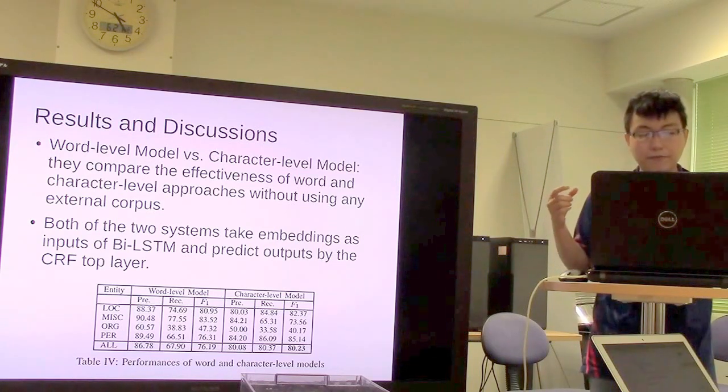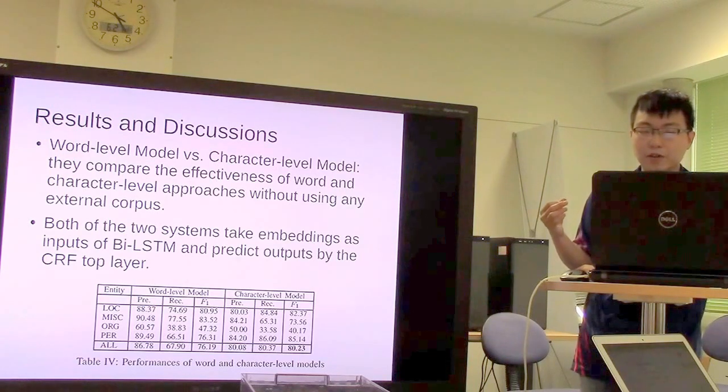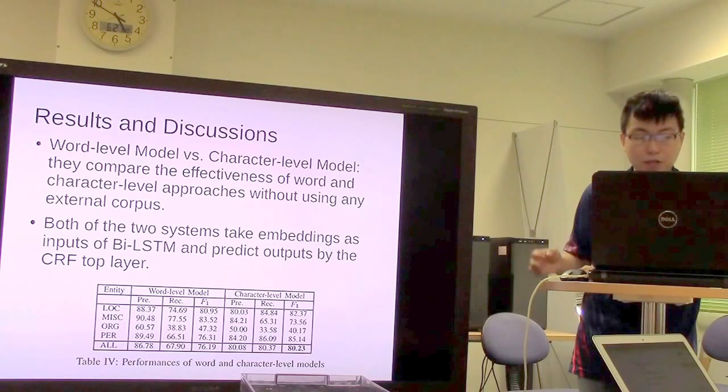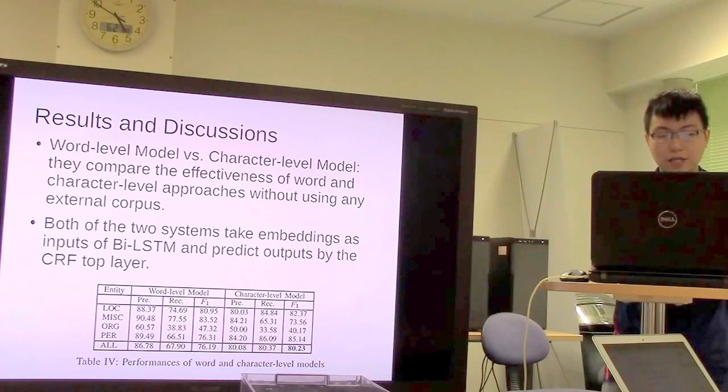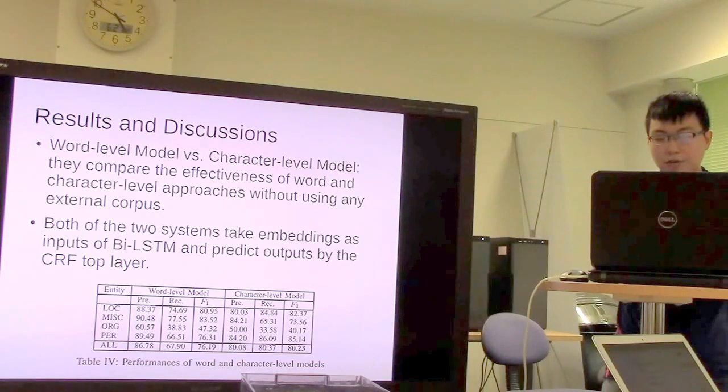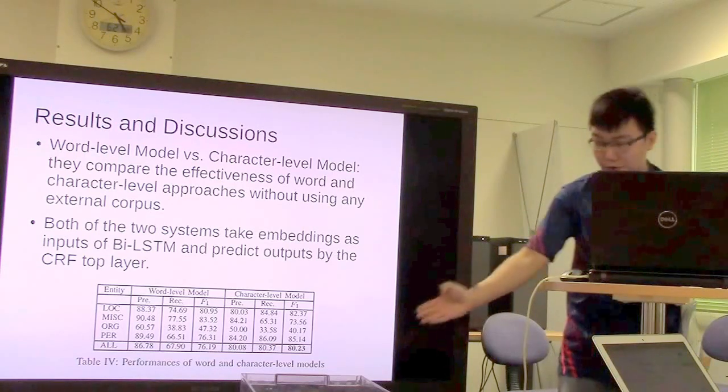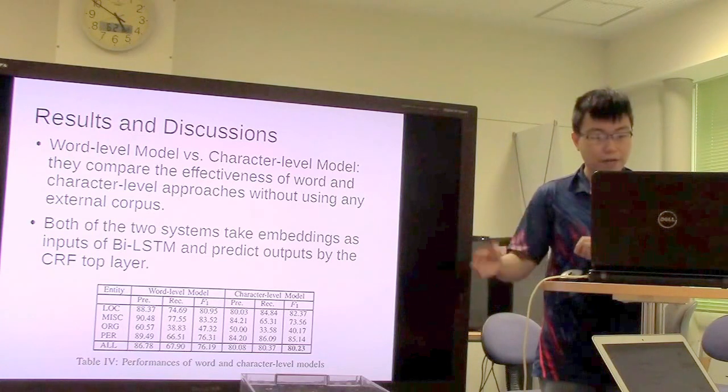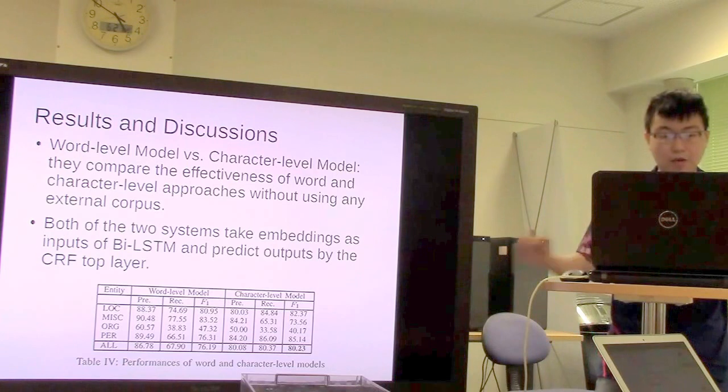They compare the effectiveness of word and character level cross-scene without using any external corpus. Both systems take embeddings as input to Bidirectional Long Short-Term Memory and predict output by the CRF top layer. The results show that the character-level model gets a higher score than the word-level model.